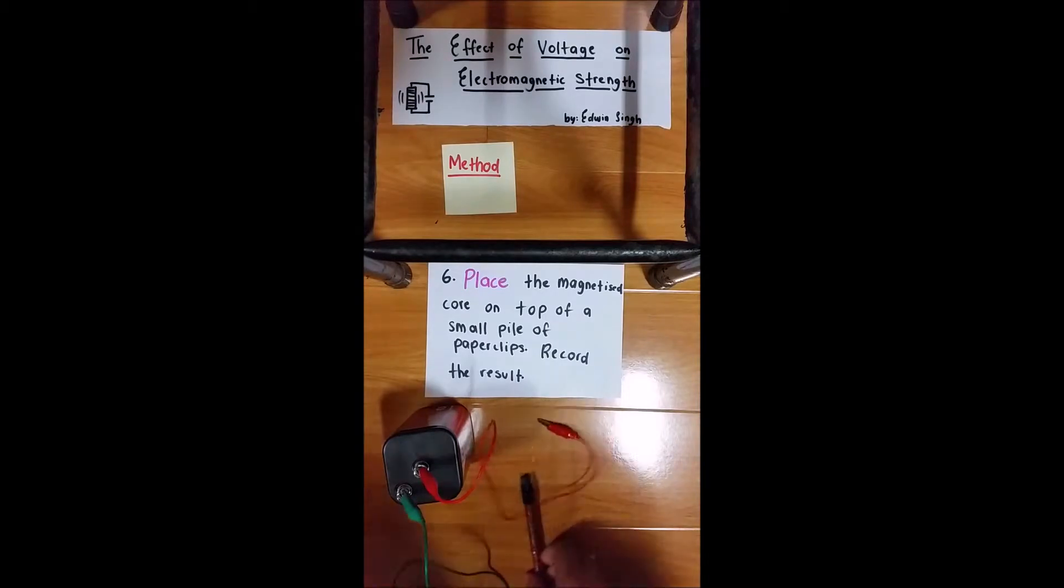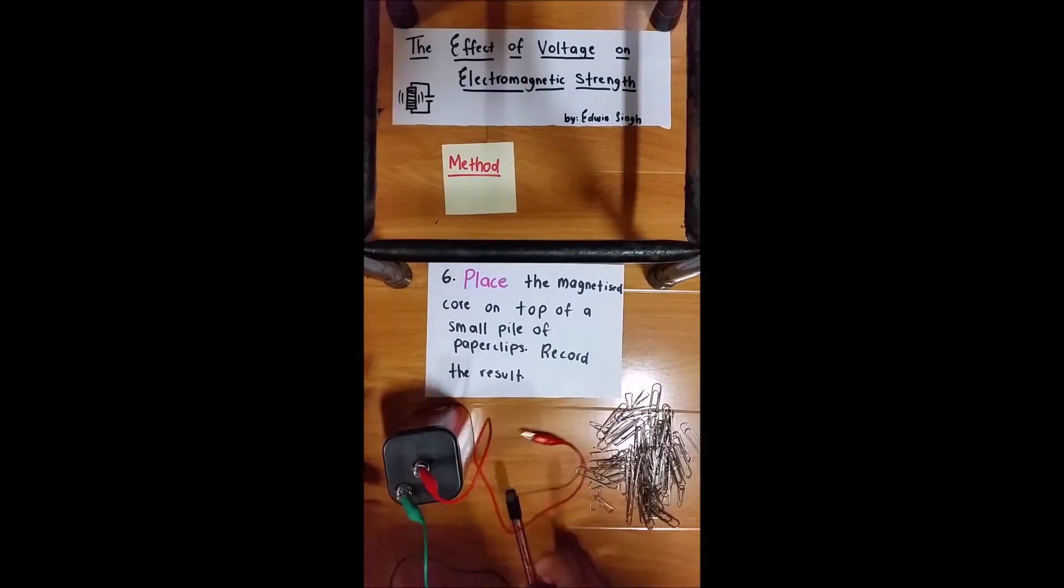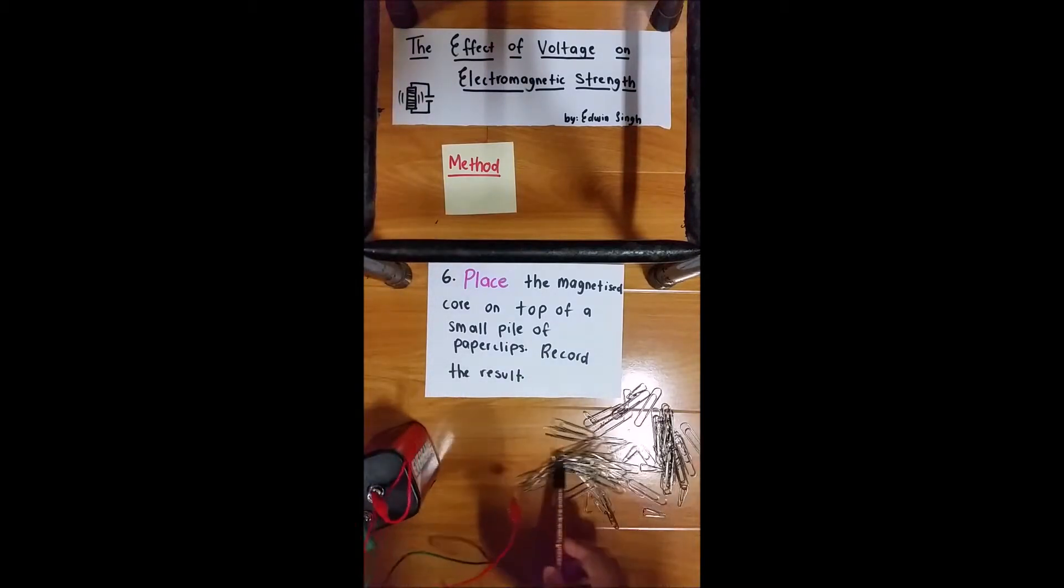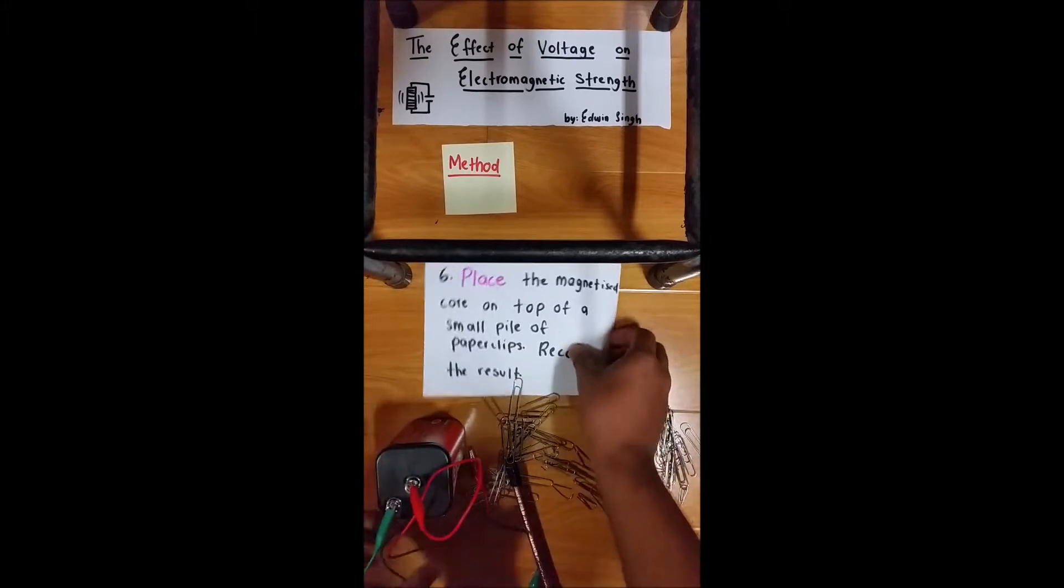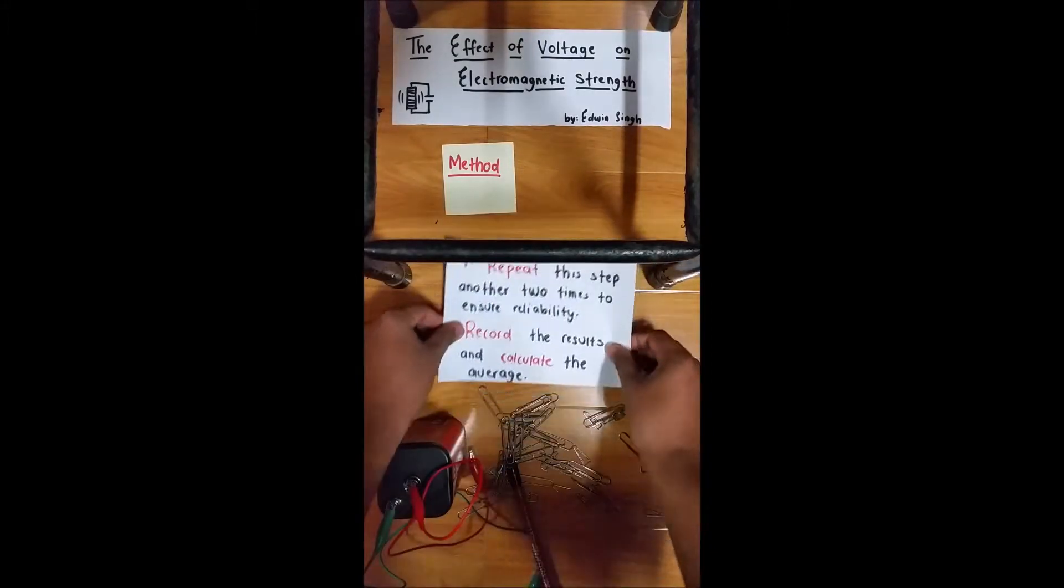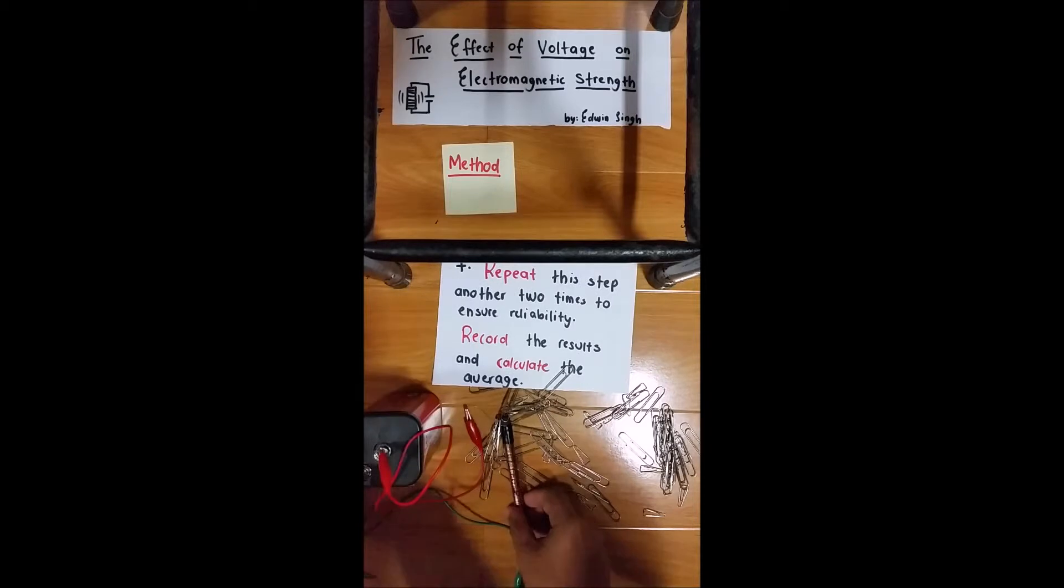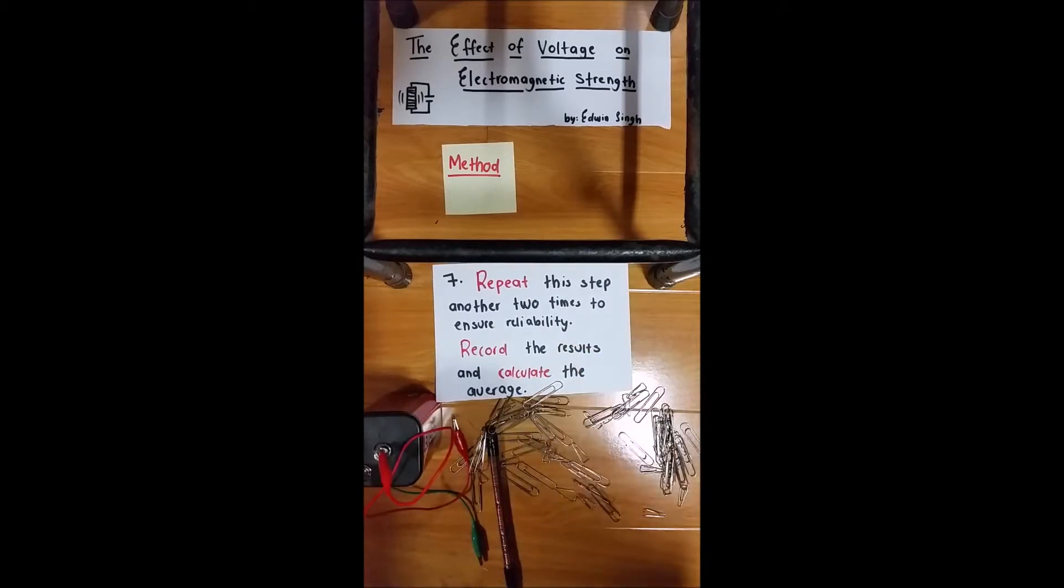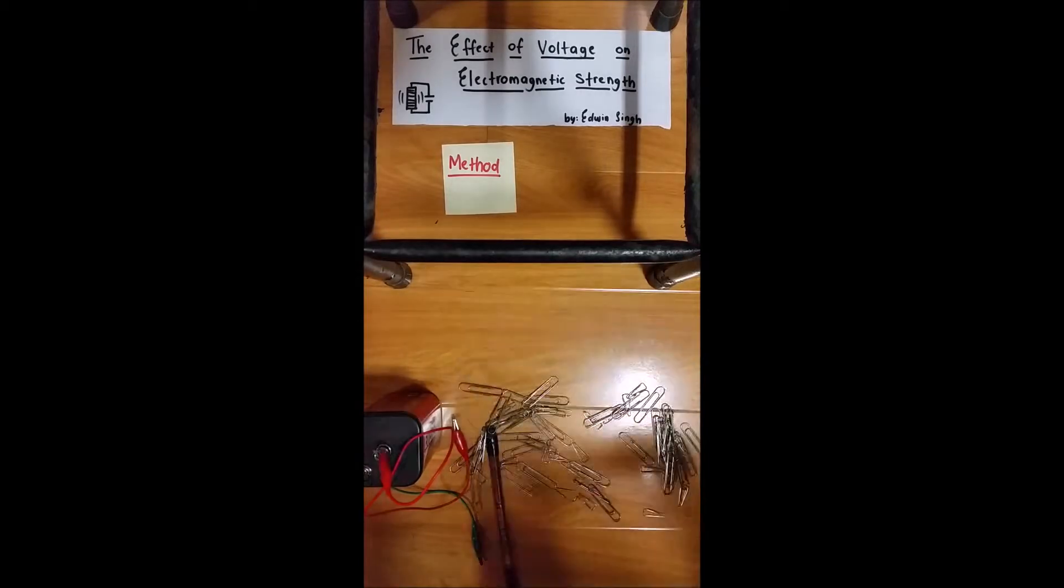Step 6, hover this electromagnet on top of a pile of paper clips. Record the amount of paper clips attracted to the iron core. Step 7, repeat this step another two times to ensure reliability of the test. Record the results and calculate the average amount of paper clips attracted to the iron core.